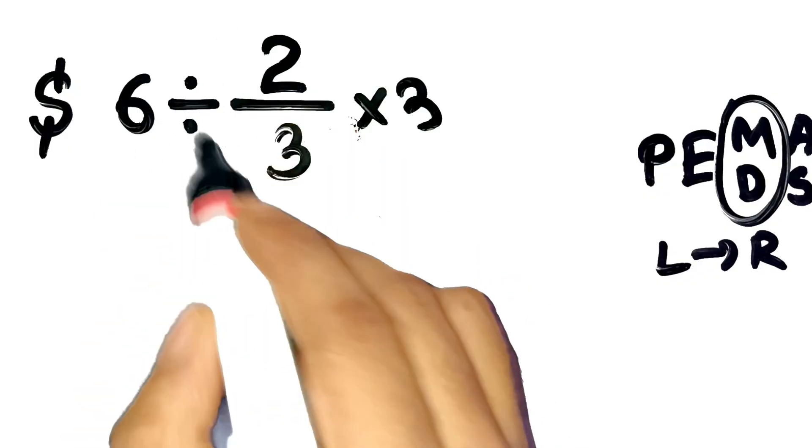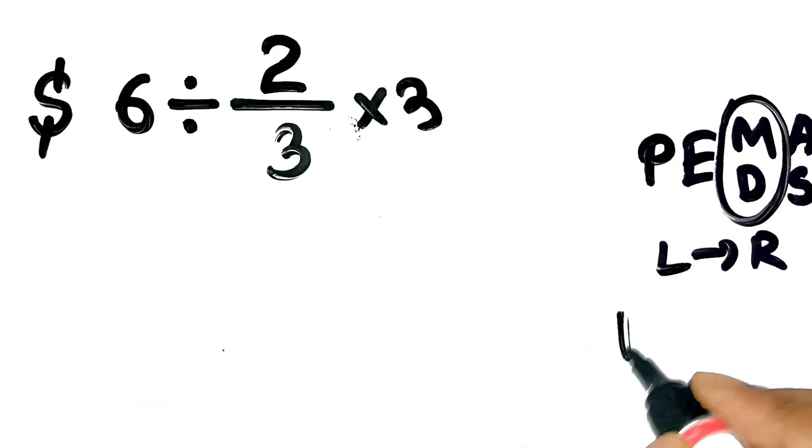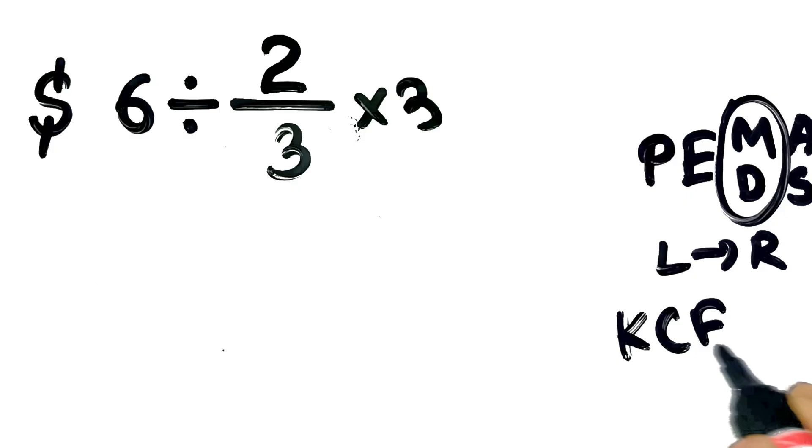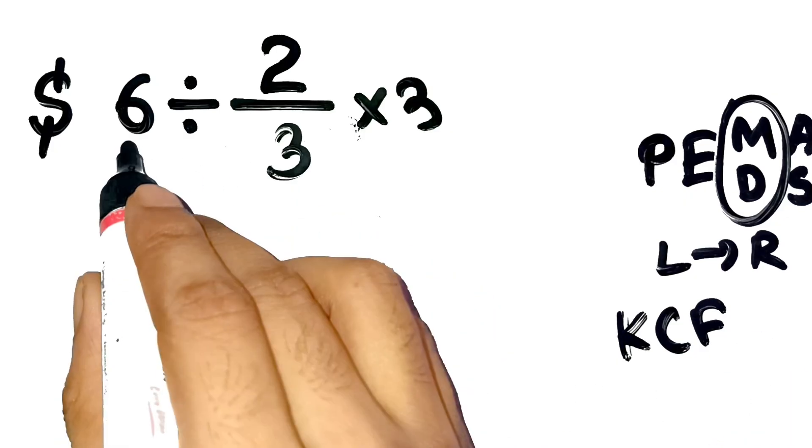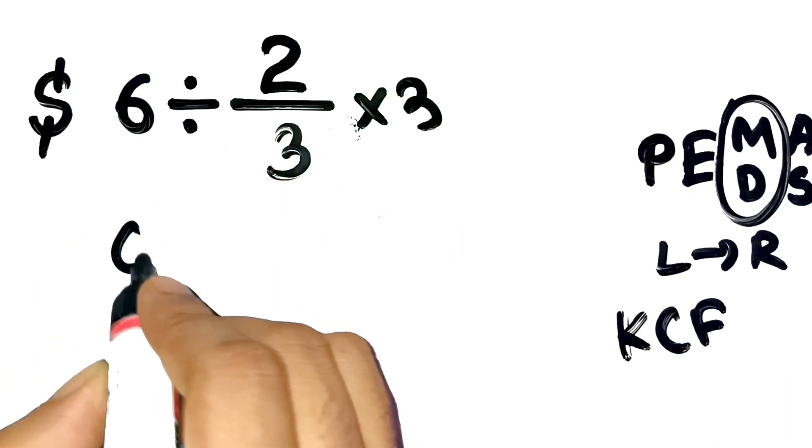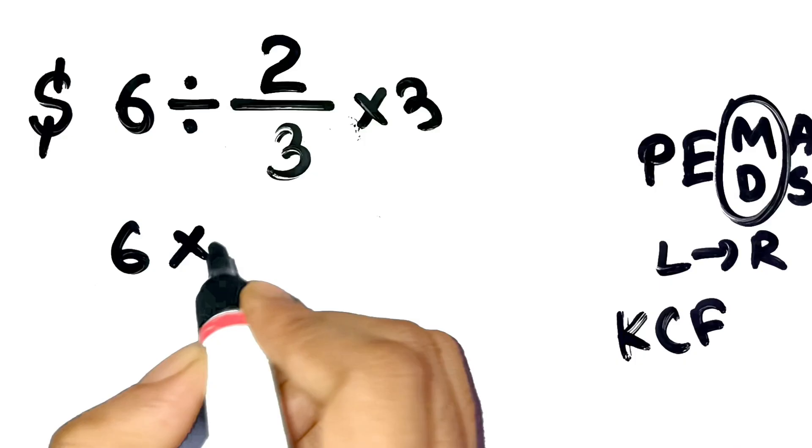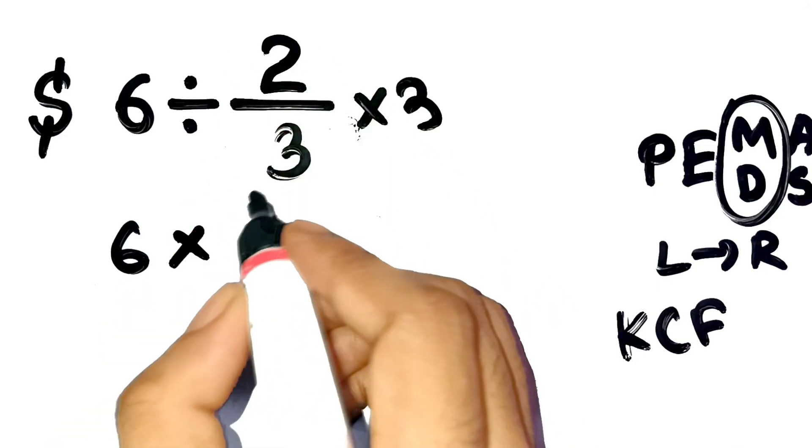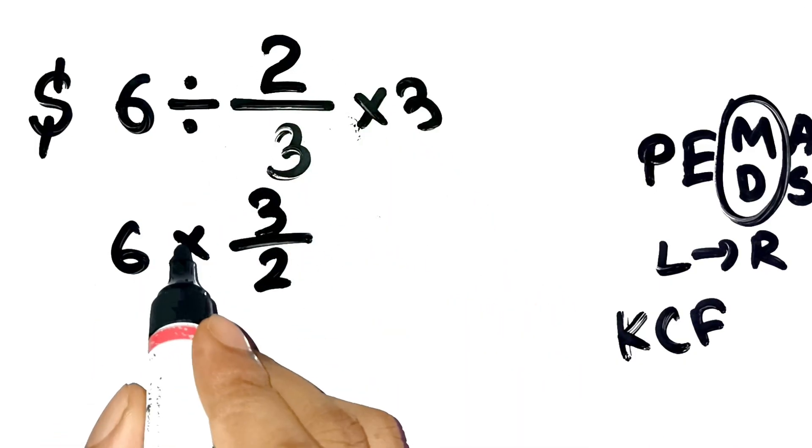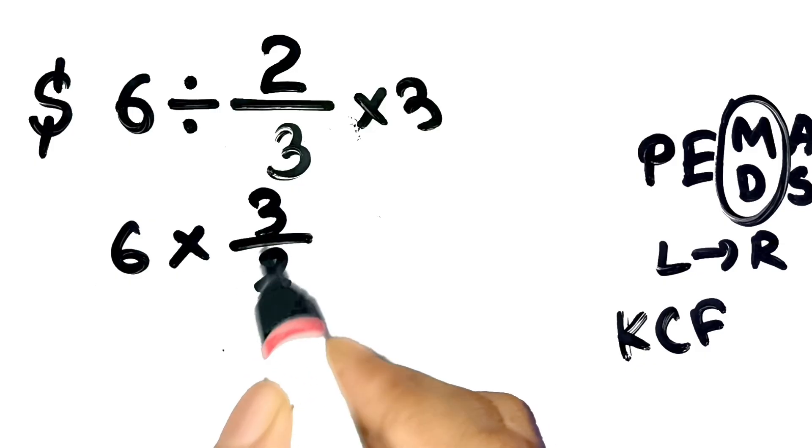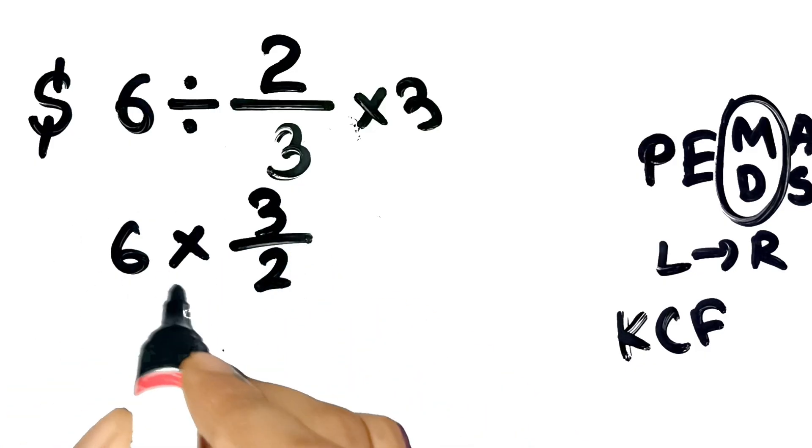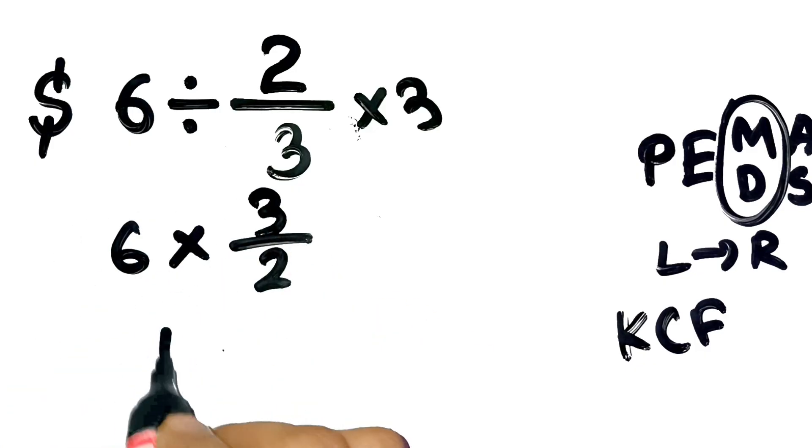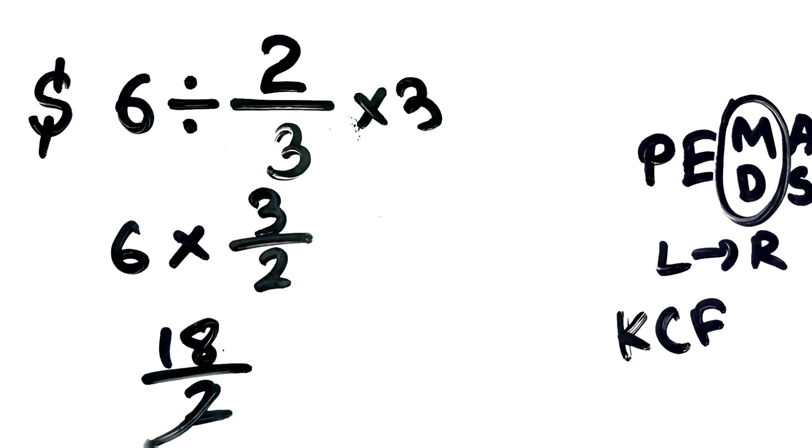And whenever we divide by a fraction, we use the KCF rule. Keep, change, flip. Keep the first number, 6, change the division to multiplication, and flip 2 thirds to 3 over 2. So, now it becomes 6 times 3 over 2. Let's do that. 6 times 3 over 2 equals 18 over 2 equals 9.